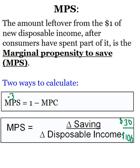Because it's out of a dollar, MPC and MPS will always total to 1. If you get $100 and spend $80 and save $20, your MPC is 0.8 and your MPS is 0.2. No matter what, they're always going to equal 1 — because of that $1, you spent some and saved some. The equation for MPS is the change in savings over the change in disposable income. But if you have either one — if you know the MPS or the MPC — you can subtract it from 1 to get the other value. MPS plus MPC equals 1.